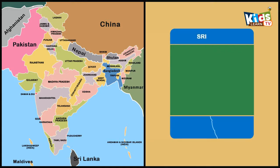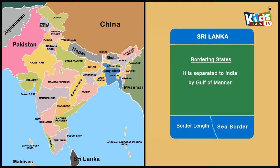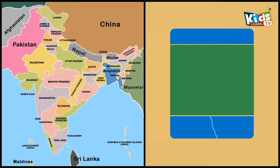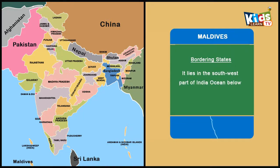Sri Lanka is separated from India by the Gulf of Manar. The Maldives lies in the southwest part of the Indian Ocean, below the Lakshadweep islands.